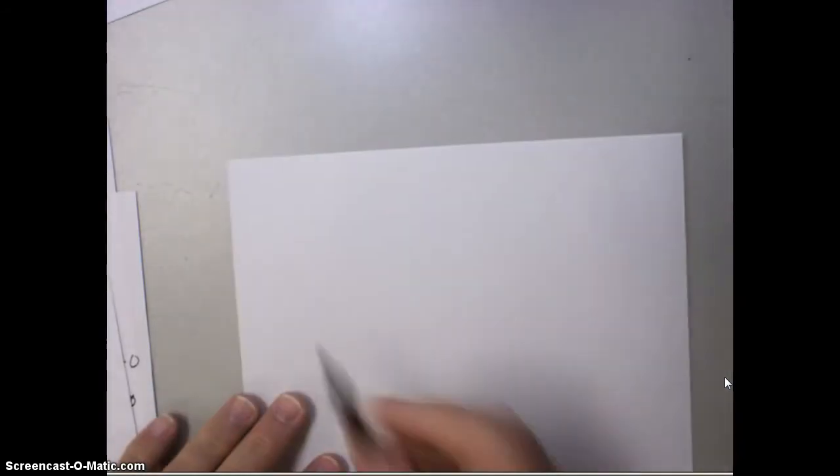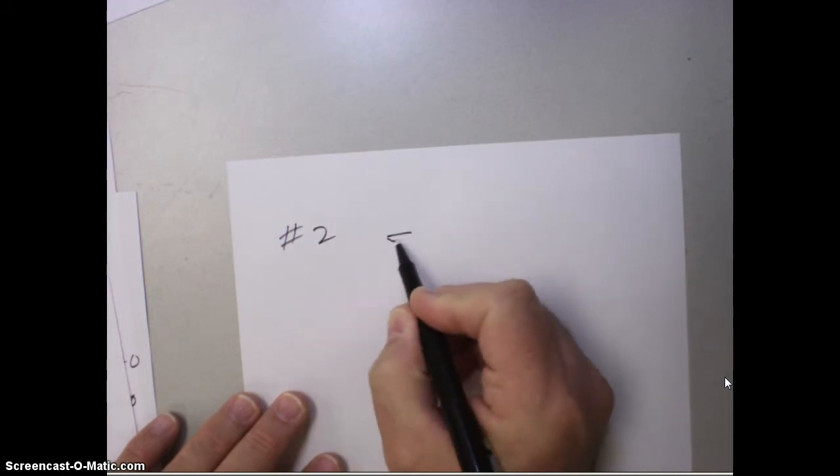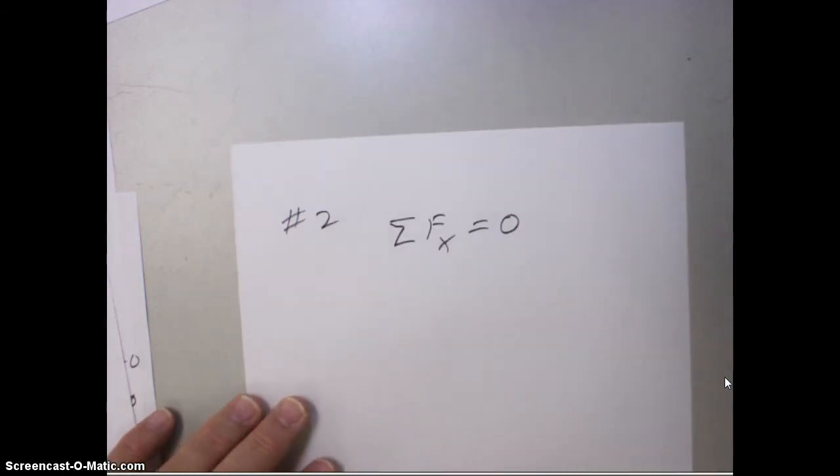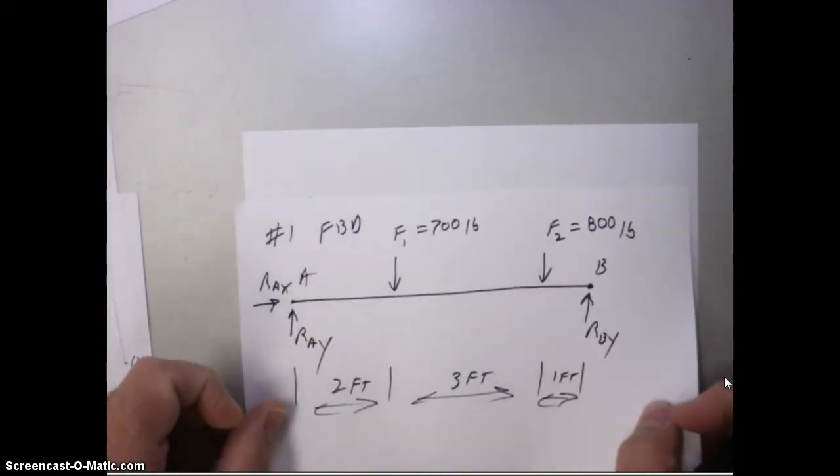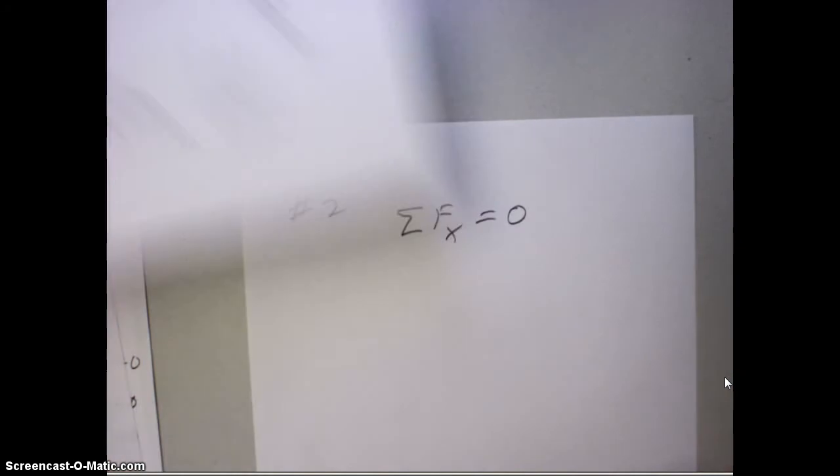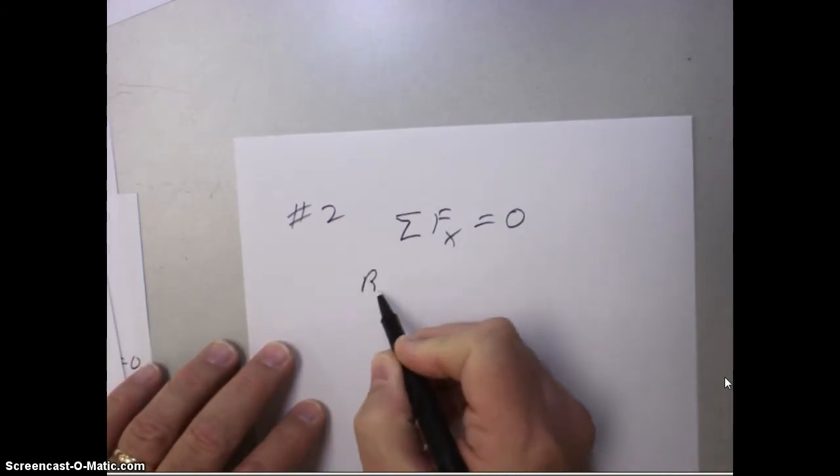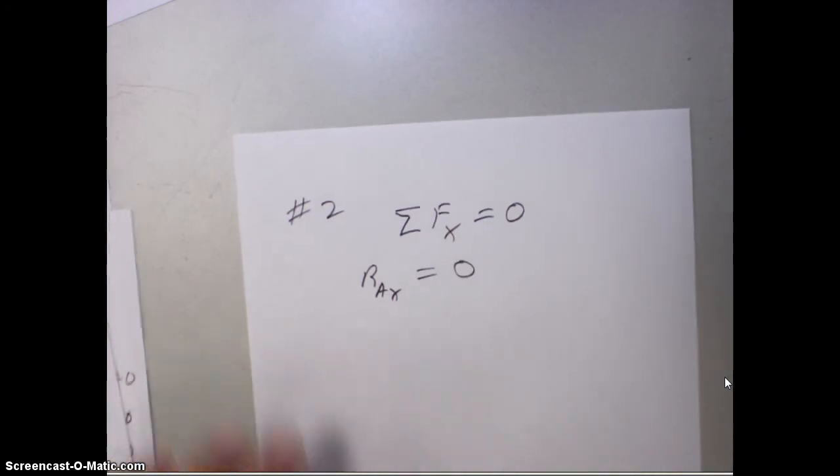Step two is to look at the sum of the forces in the X direction, set it equal to zero. Going back to our free body diagram, we look at all the forces going right or left. The only one going right or left is RAX, and that equals to zero. So that's step two.